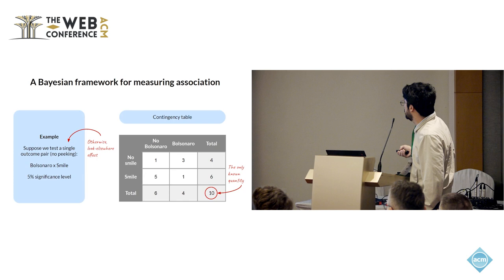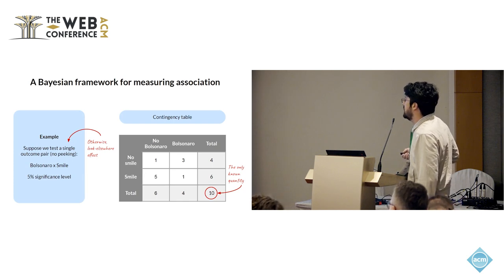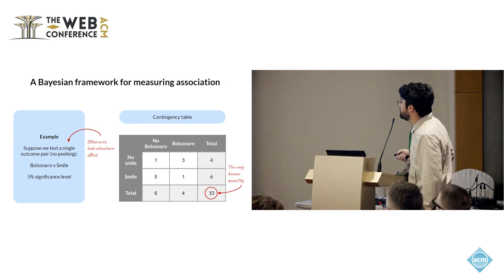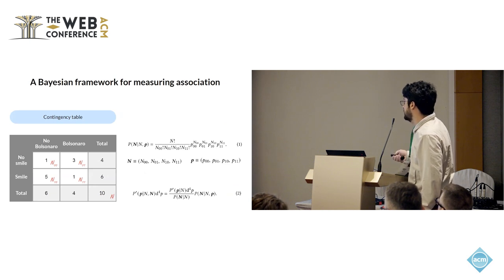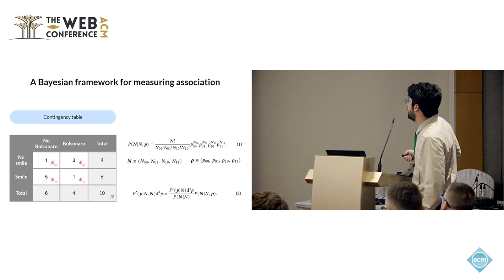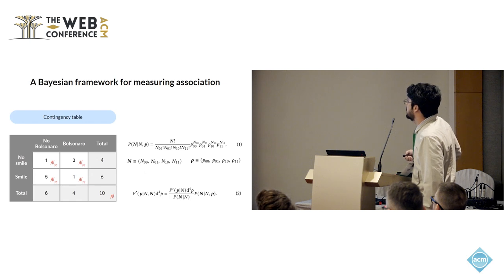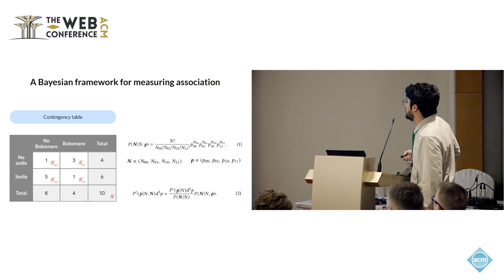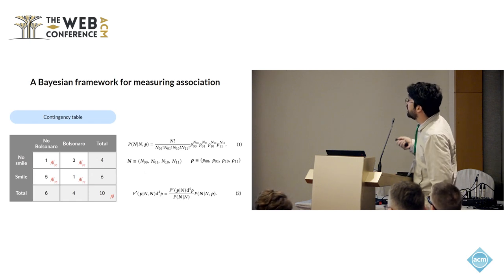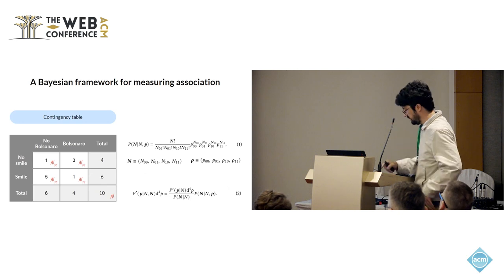Let's say you'll flag something as associated if it exceeds a 5% significance level. In this setup, the number of times these two variables appear together follows a multinomial distribution. Using Bayes' theorem, you flip this around to get the probability of the underlying process — the probabilities the underlying process is believed to have — that generated the data. With a flat prior (no prior information about the results), the likelihood gives you the posterior.